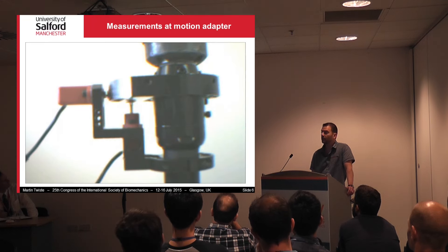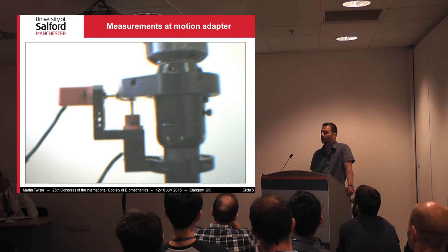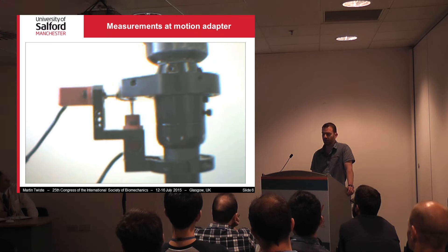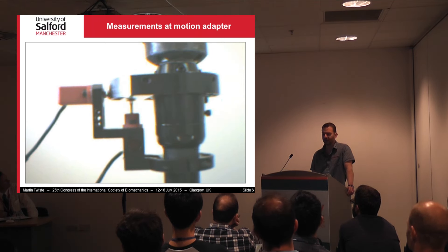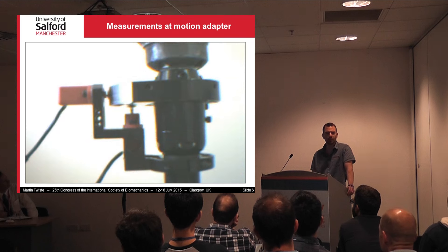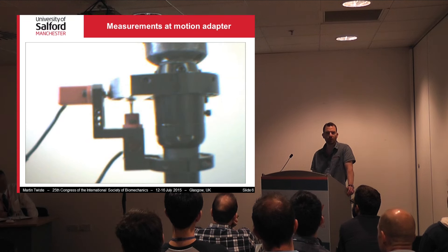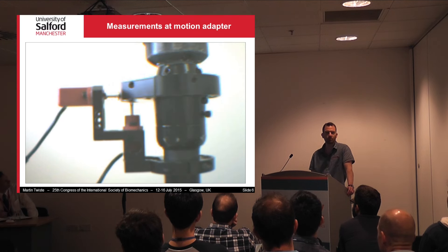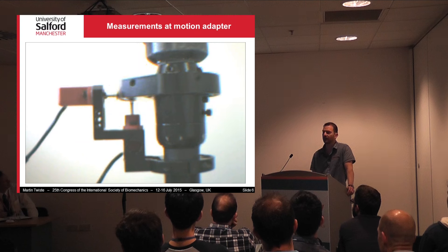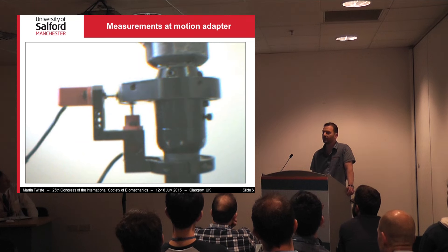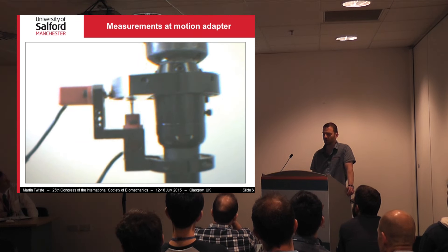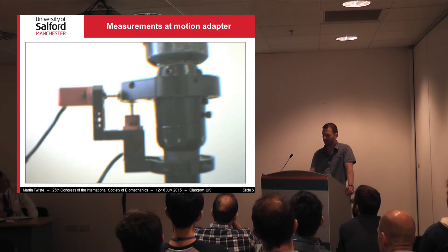Here you can see the motion adapter in action — you can see how transverse rotation can take place without affecting the plunger for longitudinal translation, and vice versa. So we essentially decoupled the two motions and could measure them independently.